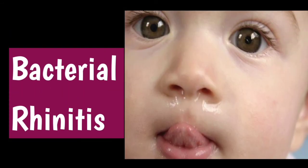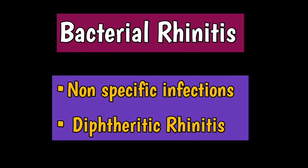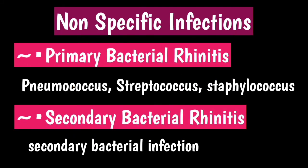Bacterial rhinitis can be in the form of non-specific infections or diphtheritic rhinitis. Non-specific infections can be primary or secondary. Primary bacterial rhinitis is seen in children and is usually the result of infection with pneumococcus, streptococcus or staphylococcus. A grayish-white tenacious membrane may form in the nose, and attempted removal causes bleeding. Secondary bacterial rhinitis results from bacterial infection supervening acute viral rhinitis.